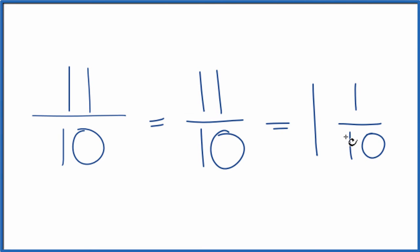We can check that. 1 times 10 is 10. 10 plus 1 is 11. There's our 11. And we just keep the denominator the same.